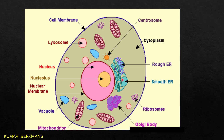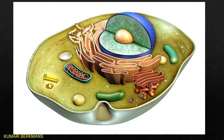Now let us see one by one. What you see here is the mitochondria, and this is the endoplasmic reticulum. There are two types: rough endoplasmic reticulum and smooth endoplasmic reticulum. What you are seeing here are ribosomes, and this is the Golgi body, this is the vacuole, this is the centrosome, and this is the lysosome.